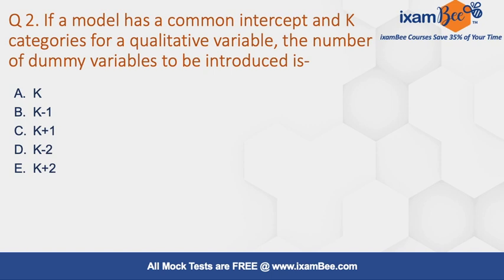Moving forward to question number two: if a model has a common intercept and k categories of a qualitative variable, the number of dummies to be introduced is k minus 1. If there are k categories of the qualitative variable, we should introduce k minus 1 dummies into the model — not k, but k minus 1.